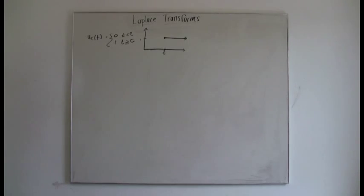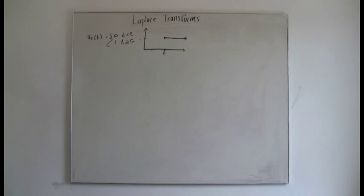So it is 0 until it reaches some value c, and then it is 1 for the rest of time. So that is the graph of u sub c of t. It's pretty straightforward.